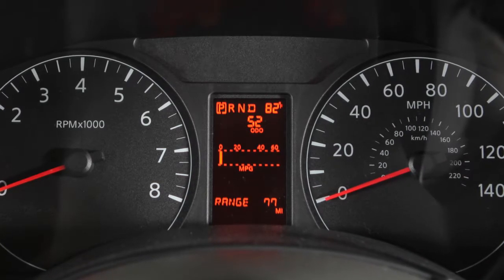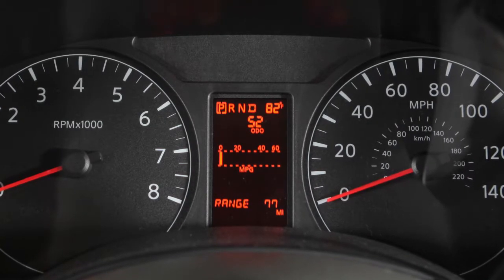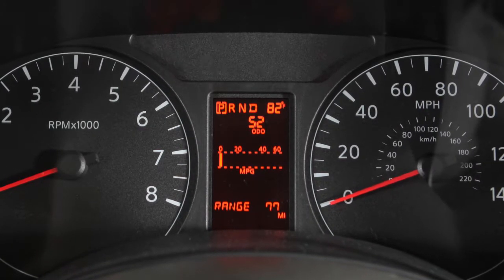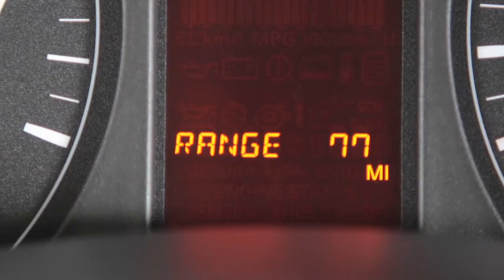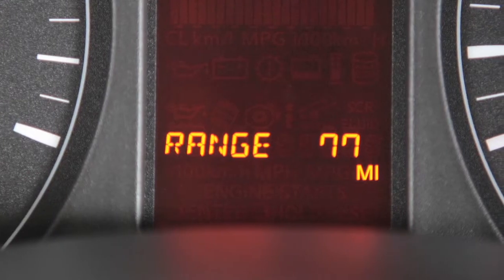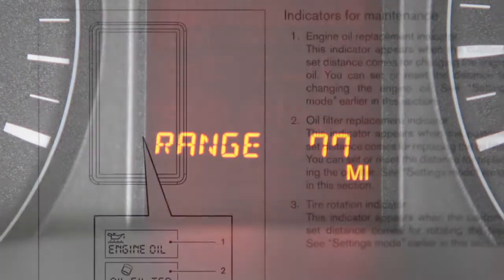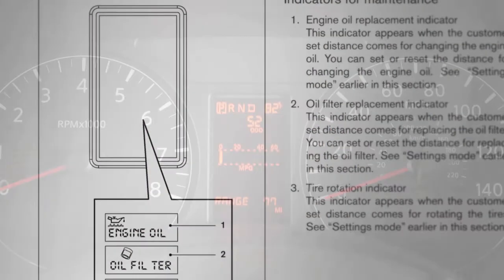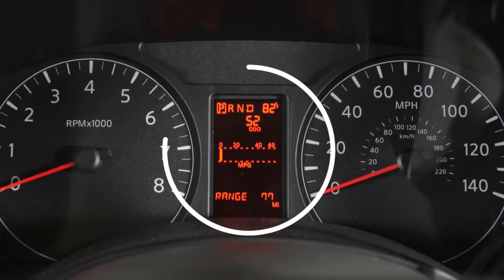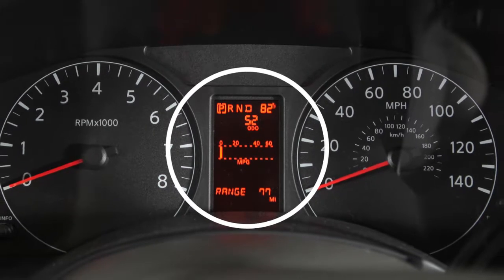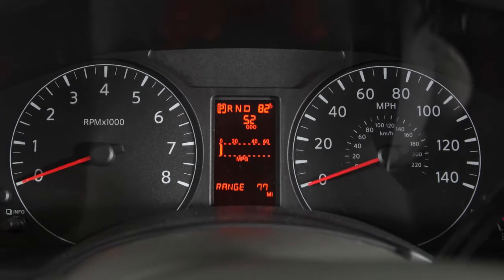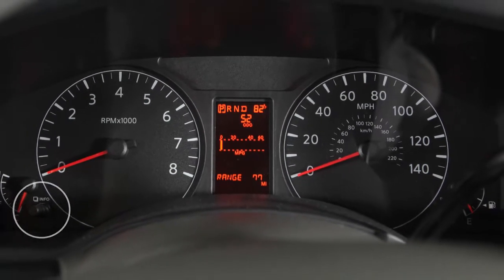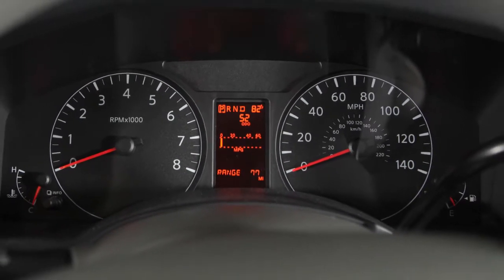Your new vehicle is equipped with a vehicle information display system that monitors a host of vehicle functions. Vehicle information is displayed in a monitor located to the left of the speedometer. Its info button is just to the left of the tachometer.